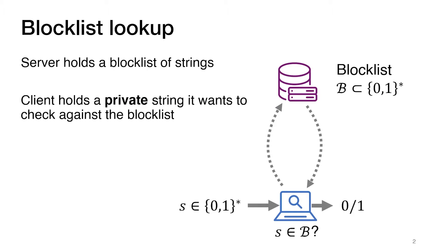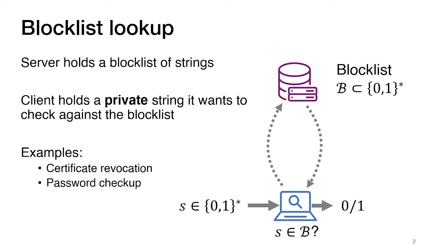In our setting, the server holds a blocklist of strings and the client holds a private string it wants to check against the server-held blocklist. There are several examples of such blocklists on the web, for example, certificate revocation lists or databases of breached passwords. And in each of those cases, the client's query string is somewhat private.